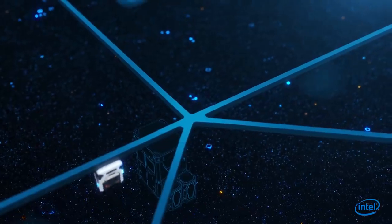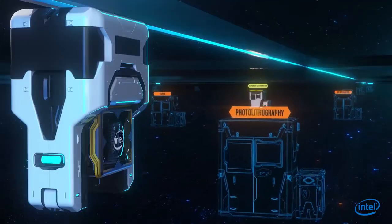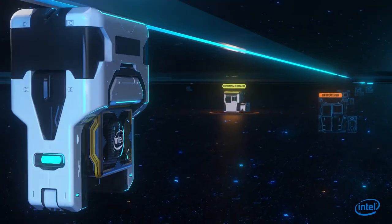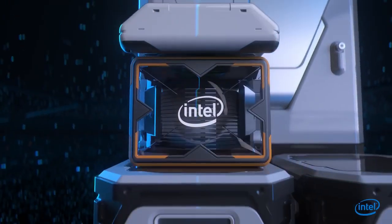The wafer first goes through a series of important steps such as photolithography, ion implantation, and etching that prepare it for the critical transistor formation process.